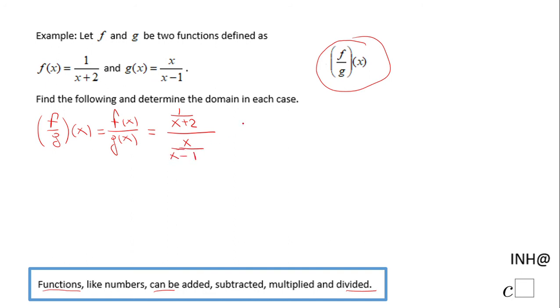This is a complex fraction: 1 over x plus 2 divided by x over x minus 1. Now we keep the first fraction, change the division to multiplication, and flip the second one. Be sure you don't put a plus like I did—you have to have a minus, x minus 1.